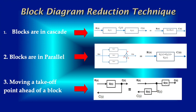Blocks in Parallel: When two or more blocks are connected in parallel, the resultant block is the sum of individual block transfer functions. That means C(s) equals G1(s) into R(s) plus G2(s) into R(s) plus G3(s) into R(s). So, output by input equals the summation of these three individual blocks.